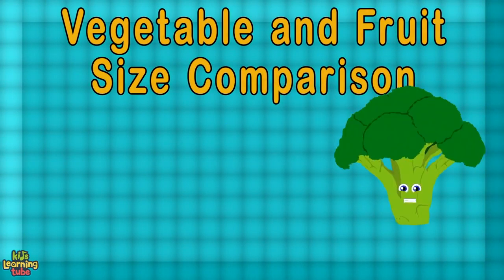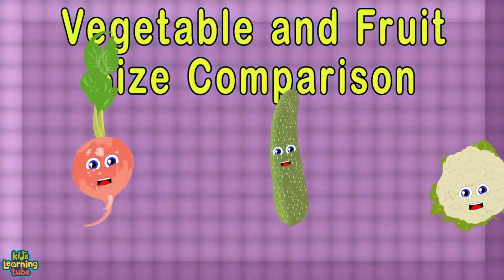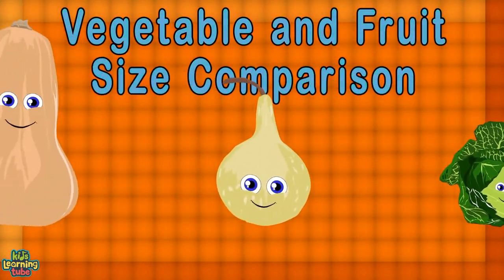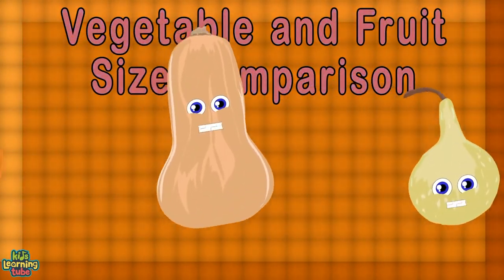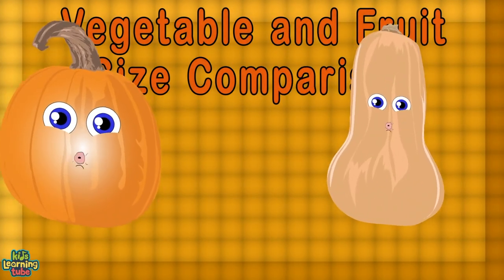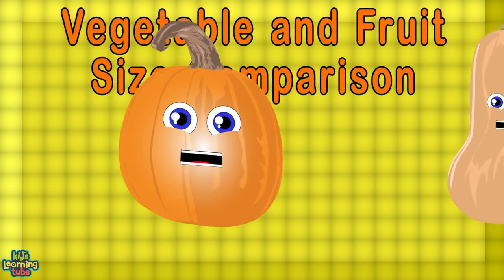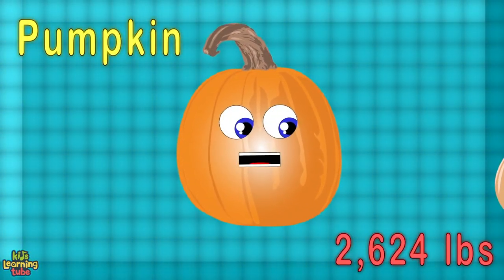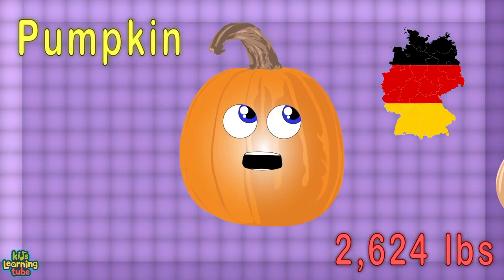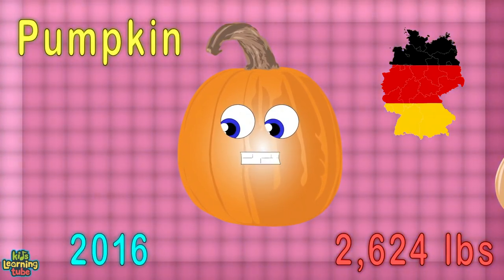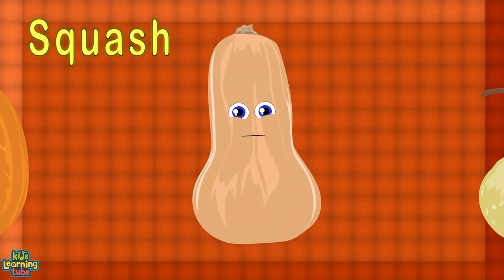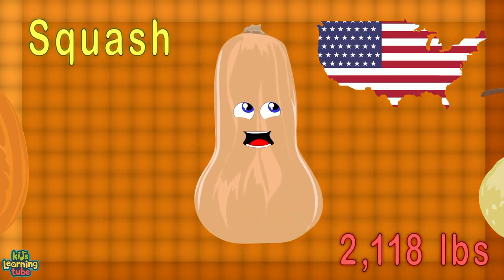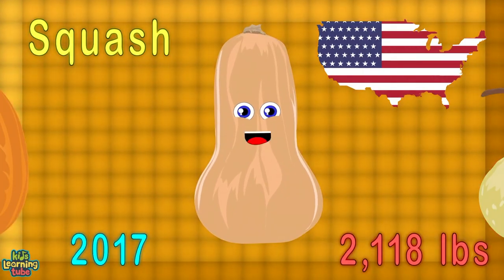This is a veggie and fruit size comparison by weight from countries around the world. I'm the biggest pumpkin — I weigh over 2,600 pounds. I'm from Germany in the year 2016. I'm the world's largest squash weighing in at 2,100 pounds, from the USA in 2017. I'm a gourd — 384 pounds is what I weighed, also from the United States in 2018.